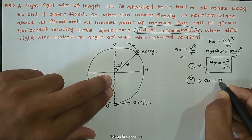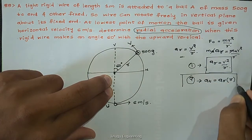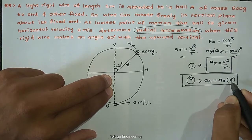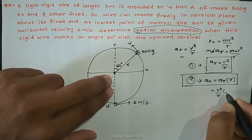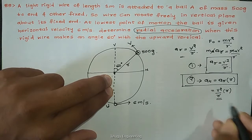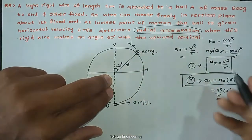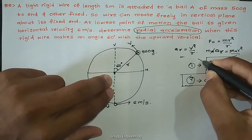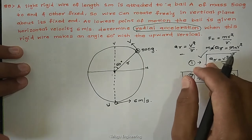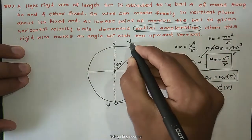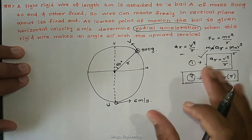Tangential acceleration at equals alpha times r, the general angular acceleration formula. In this question, what they are asking is to find the radial acceleration, the first type. So to find the radial acceleration, our main task is to find the velocity v at that point first. We will apply the law of conservation of energy, as energy is neither created nor destroyed.